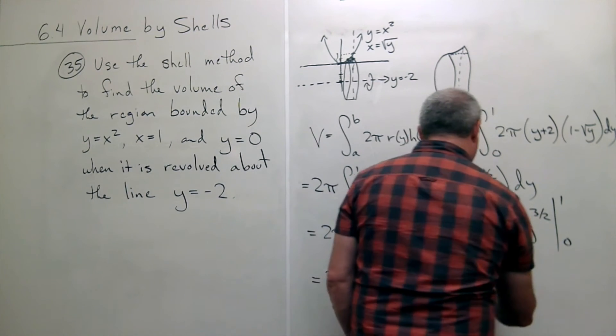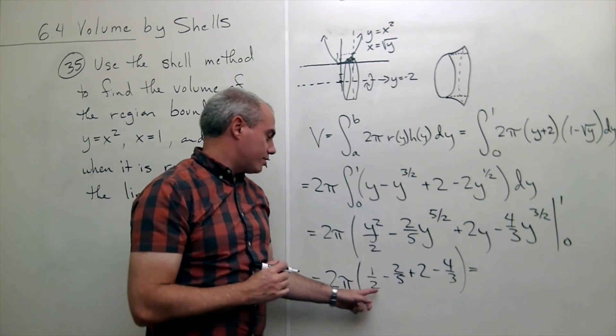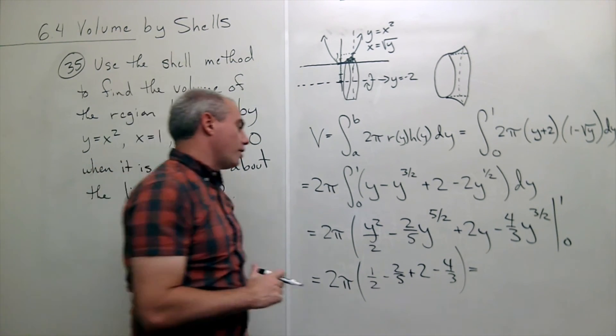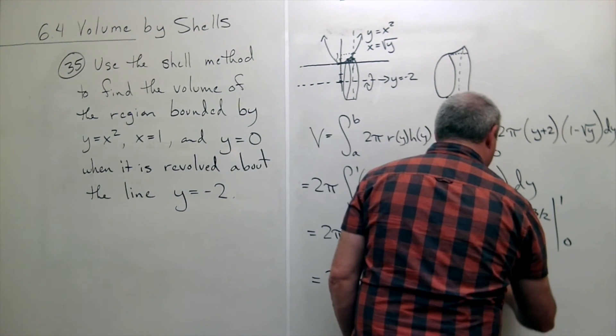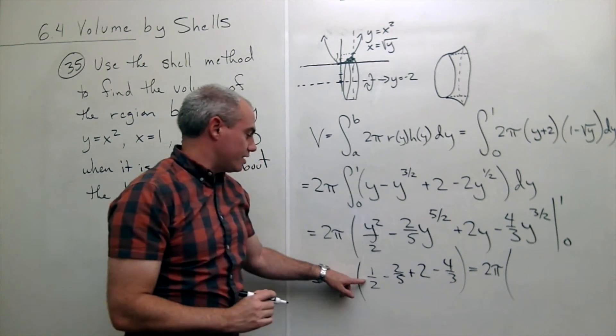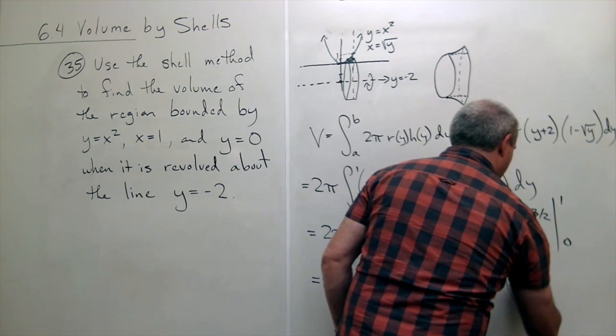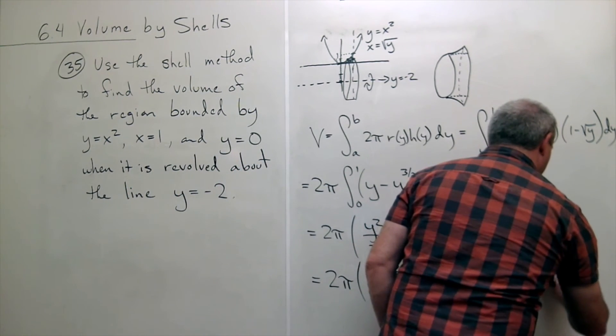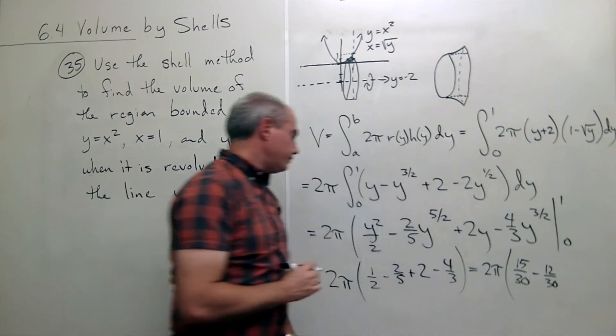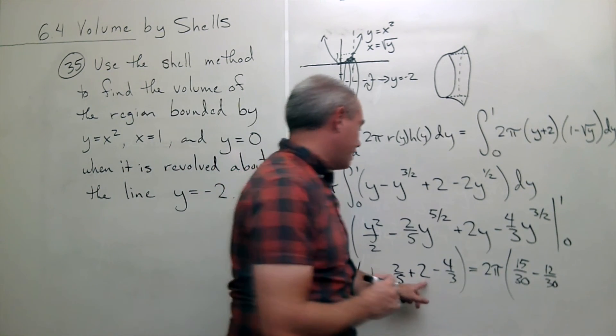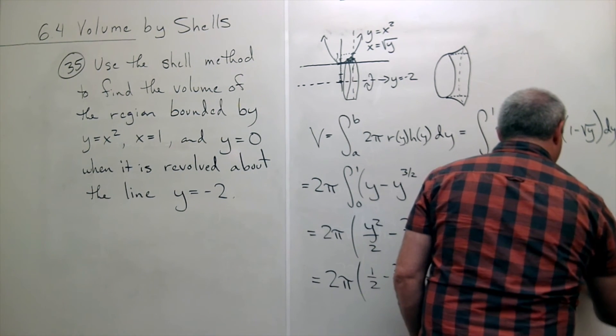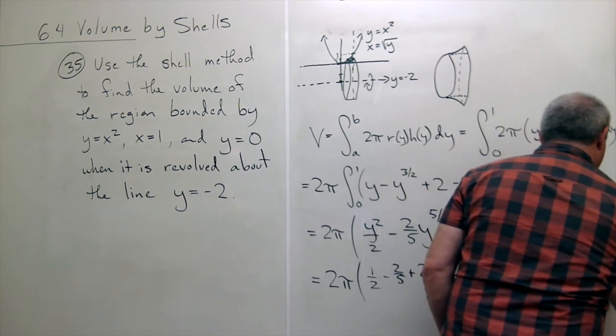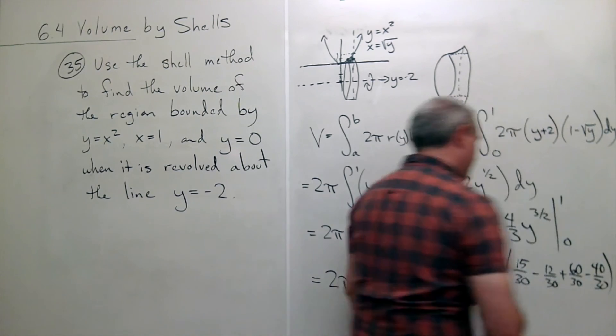What is a common denominator for all of these guys? I've got a two on the bottom, a five on the bottom, and a three on the bottom. Fifteen won't do it, but thirty will. So let's get a common denominator of thirty for all of these guys. When I do, this is fifteen over thirty. This guy would be minus twelve over thirty. Then I get plus sixty over thirty. And finally, minus forty over thirty.